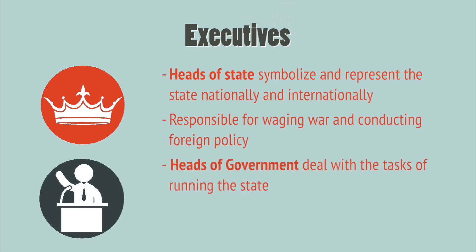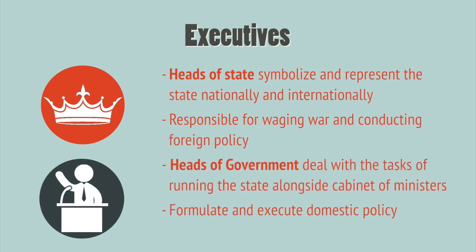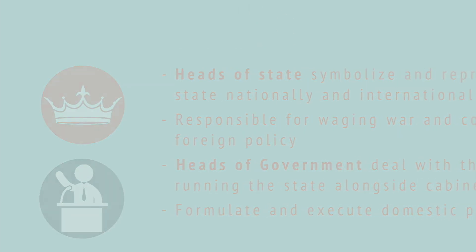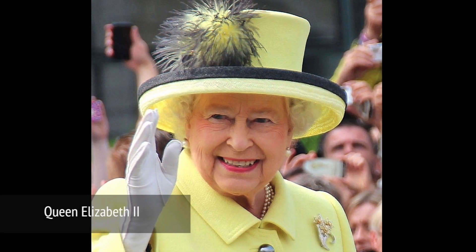There are two types of executives: heads of state and heads of government. A head of state symbolizes and represents the state nationally and internationally, embodying and articulating the goals of the regime, and is responsible for waging war and conducting foreign policy. A head of government deals with the tasks of running the state, formulating and executing domestic policy alongside a cabinet of ministers charged with specific policy areas. The head of government is directly responsible for policy management, while the head of state serves more of a symbolic function. In the United Kingdom, the queen acts as head of state and formally appoints a prime minister to act as head of government.